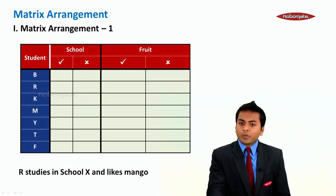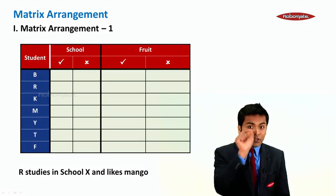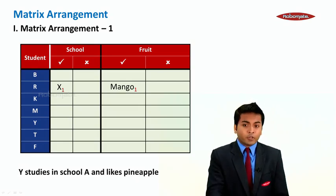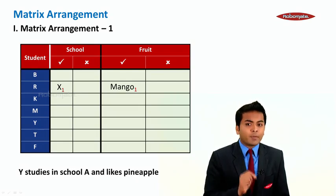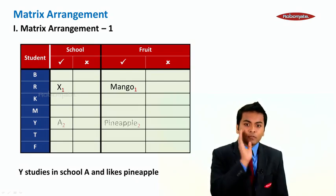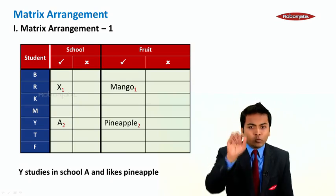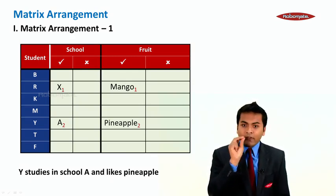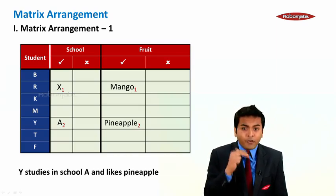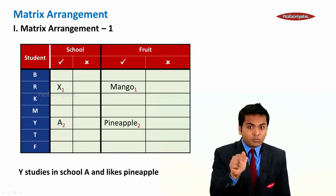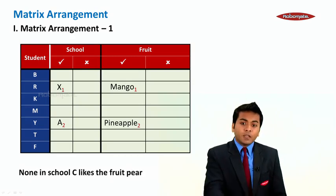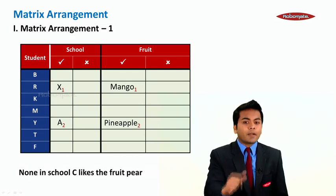The first statement: R studies in school X and likes mango, so we write X under school and mango under fruit for R. Next, Y studies in school A and likes pineapple, so we write A and pineapple for Y. The color suffixes (one, two) are just for reference indicating the order entries were filled. No one in school C likes pear — since we don't know who goes to school C yet, we note this outside the table for future use.